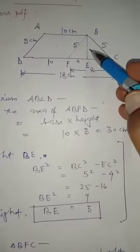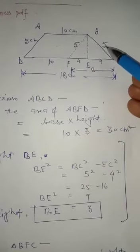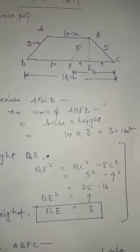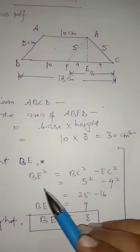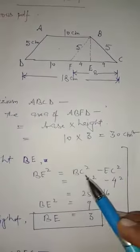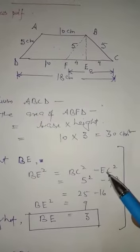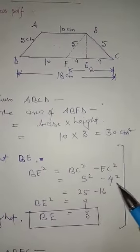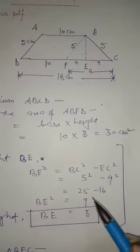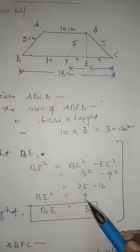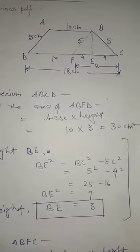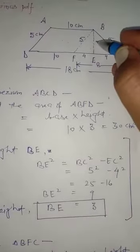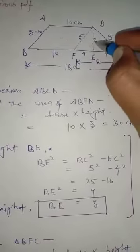BE square equals BC square minus EC square. Hypotenuse square minus base square: 5 square minus 4 square equals 25 minus 16 equals 9. BE square equals 9, so BE equals 3. The height BE is 3 cm.